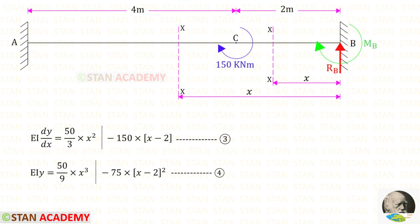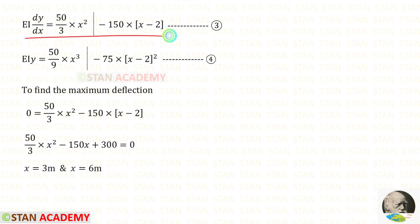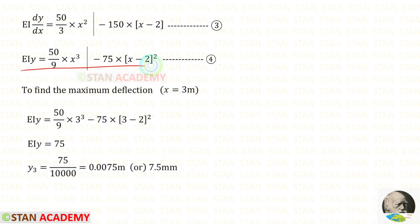In the question we have been asked to find the maximum deflection. The maximum deflection will occur in the portion AC, but we do not know exactly where. We apply the condition that when deflection is maximum, the slope equals 0. Setting dy/dx equal to 0 in the slope equation and solving using a calculator gives two values of X; one value is not applicable, so the maximum deflection occurs at X equals 3. Substituting X equals 3 into the deflection equation with EI equal to 10,000 gives a maximum deflection of 7.5 millimeters.